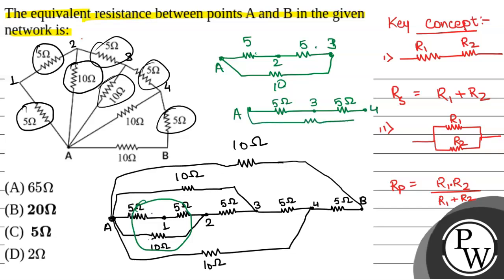And between point A and 4, there is a 10 ohm resistor. So again, between point A and 4, there will be a total resistance of 5 ohm, because 5 and 5 are in series giving 10, and 10 in parallel with 10 gives 5. So between point A and 4, there is a 5 ohm resistor only. And again, between 4 and B there is a 5 ohm resistor, and in parallel there is a 10 ohm resistor. So again we have series combination 5 and 5, and 10 in parallel with 10, giving again 5 ohm.